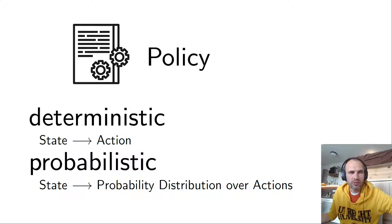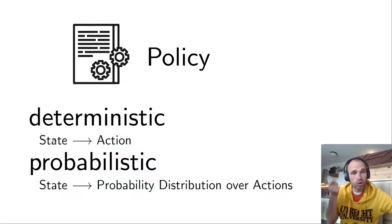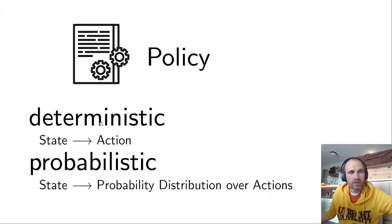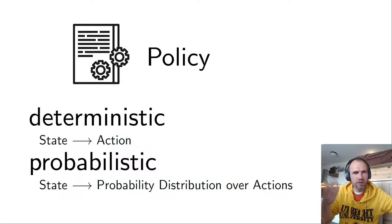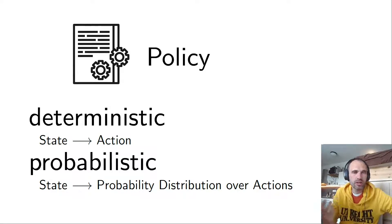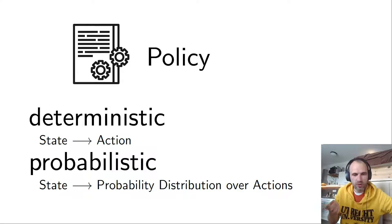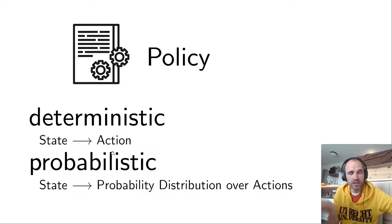The next term — really a central term in reinforcement learning — is policy. A policy can be either deterministic or probabilistic. A deterministic policy, for each state, says what to do. A probabilistic policy doesn't specify a single action, but says, for example, 50% we do this and 50% we do that. A uniformly random agent, which does every possible action with equal probability, is a possible policy — so those are two different types of policies.